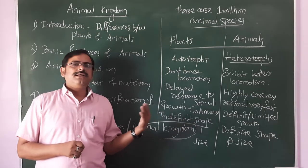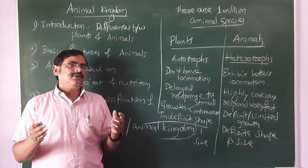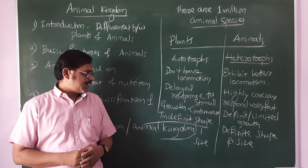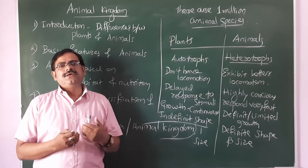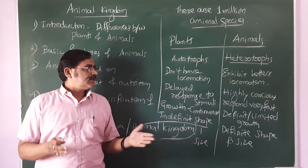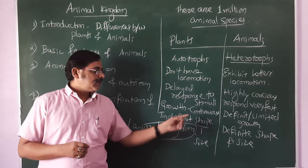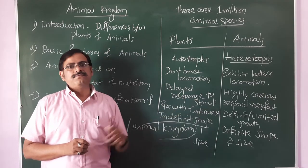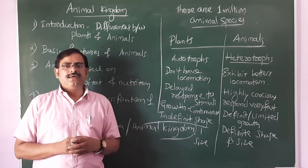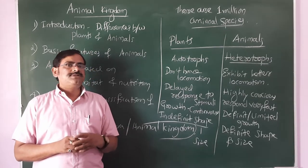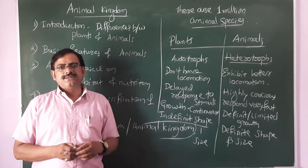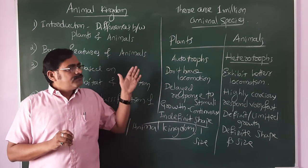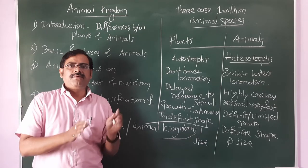Plants and animals do have slight similarities, but there are lots of differences. Growth is very continuous in plants, with high regeneration capacity, but in animals growth is definite, with a perfect shape and size. Regeneration ability is limited to certain animal groups like sponges, planaria, or starfish — only a limited number of animal groups exhibit regeneration, not all animals.